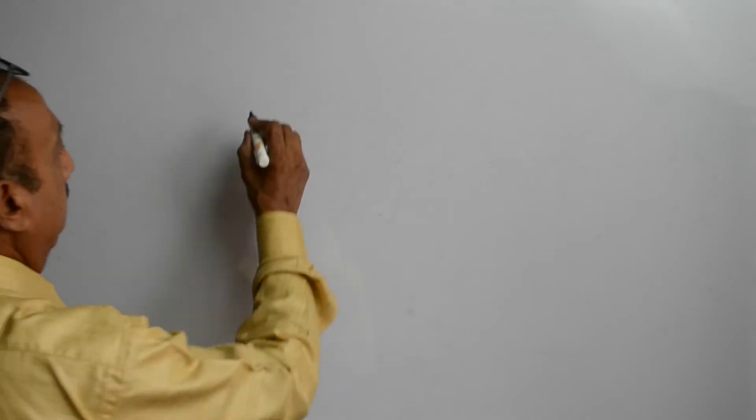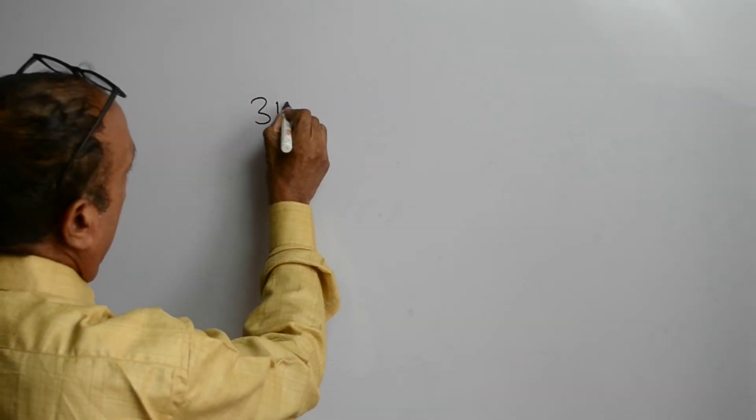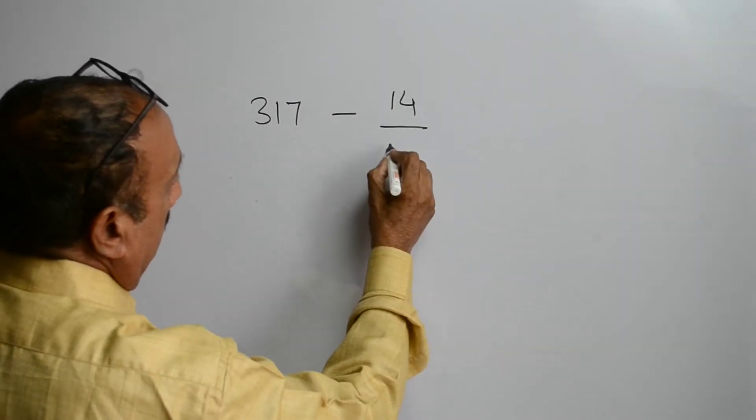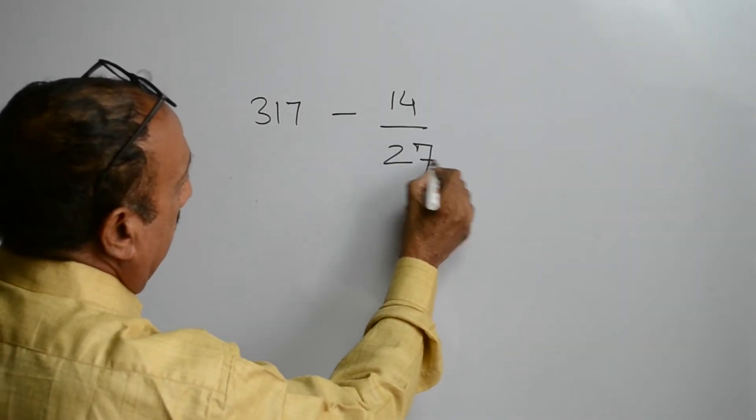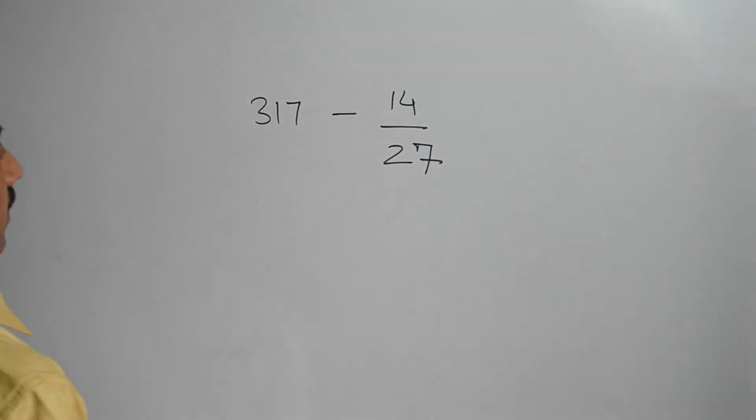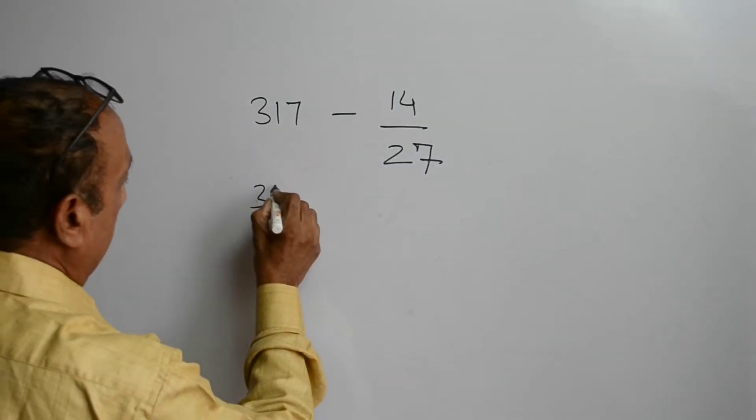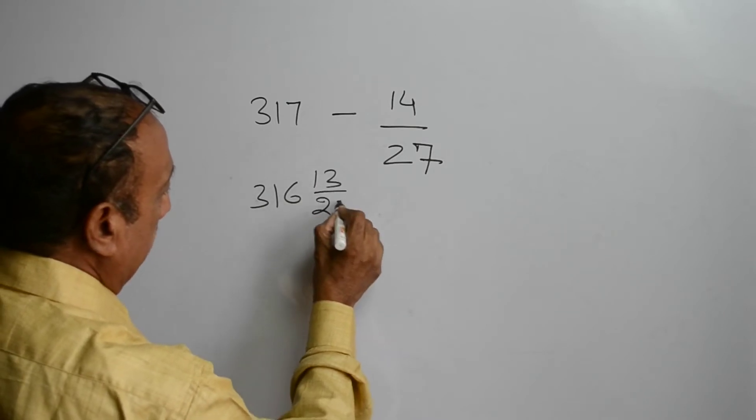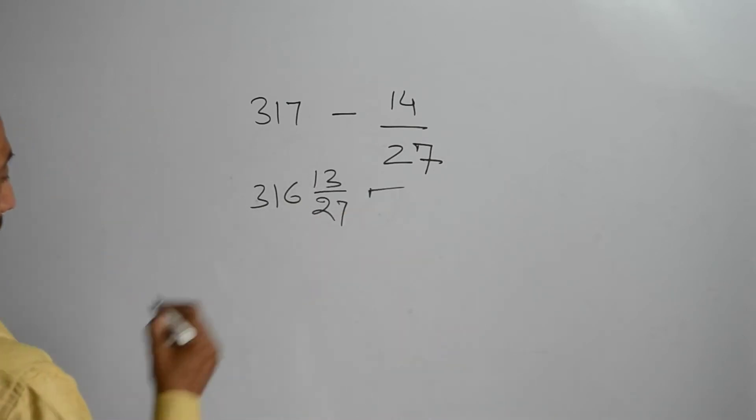We want to subtract 14 upon 27 from 317. The answer will be 316 and 13 upon 27. If we subtract 21 upon 46 from 487, the answer will be 486 and 25 upon 46.